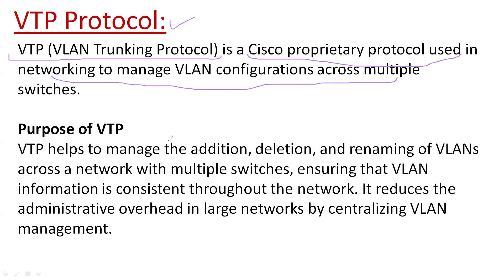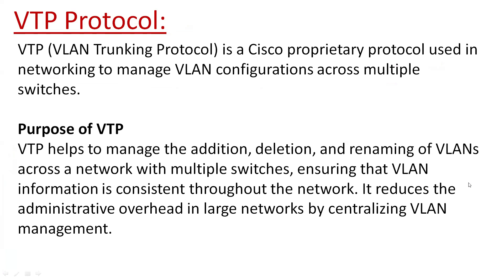VTP creates, deletes, and renames VLANs throughout a Layer 2 network when multiple switches are connected in series. By the help of VTP, we can forward multiple VLAN information, and it will automatically and dynamically create the VLAN on other devices, delete the VLAN on other devices. There are several modes in VTP by which we decide which switch can create, delete, or rename VLANs.